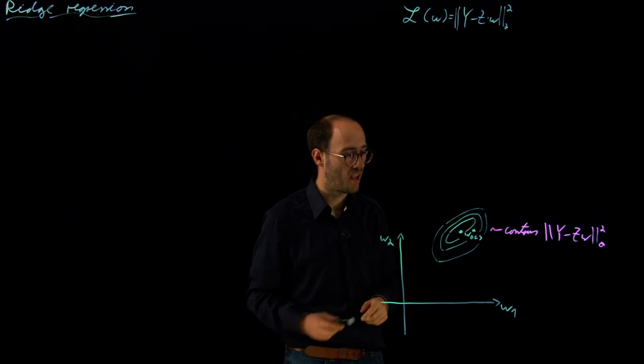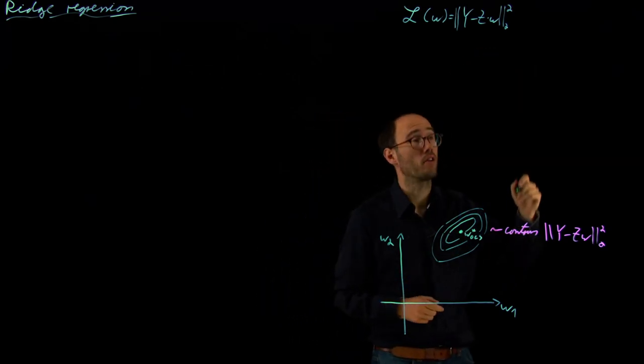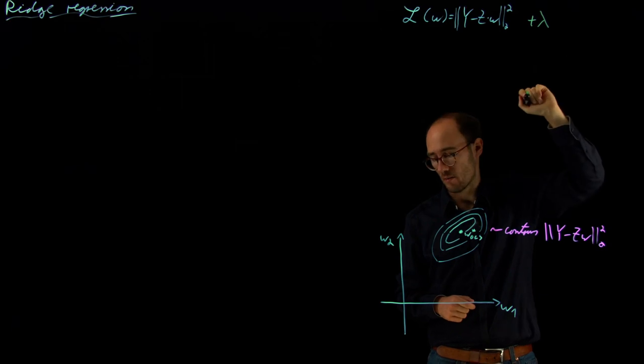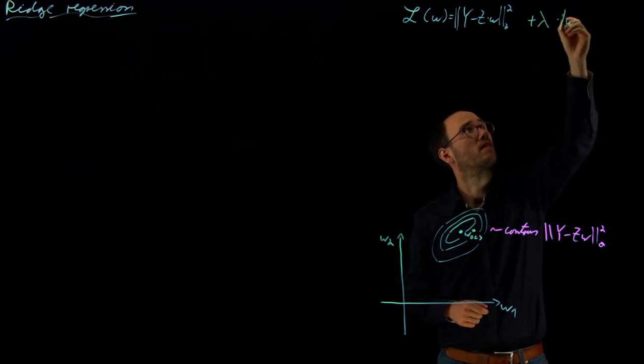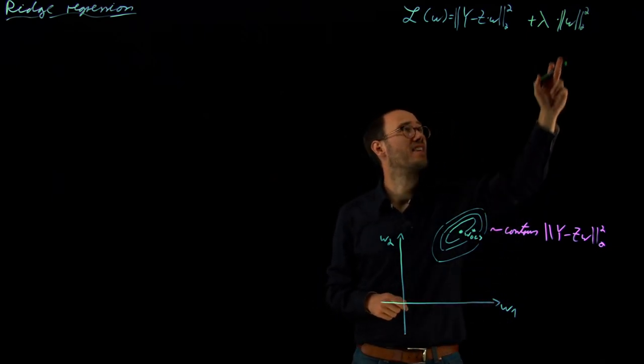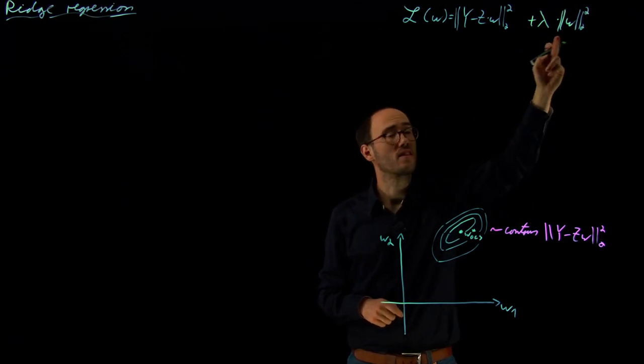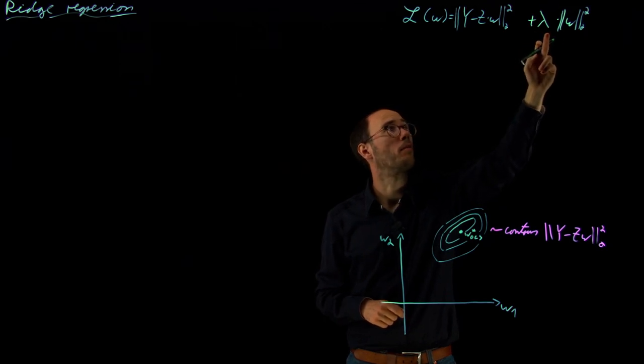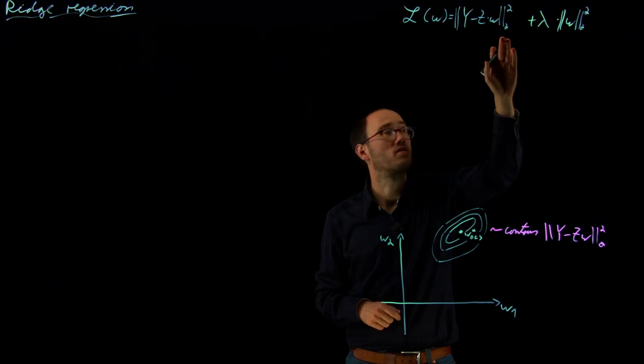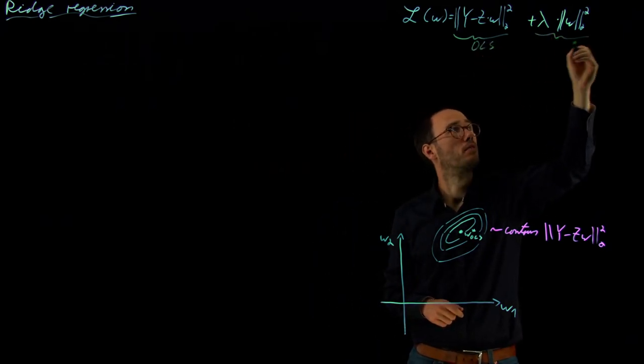The idea of ridge regression is to compensate for this issue by adding a penalty term to our loss function. This penalty term is some weighting factor lambda, a scalar, times the squared Euclidean norm of w. So we will sum up all the squares of the parameters, multiply them with lambda, and have a trade-off between a squared penalty loss on the parameters and the ordinary least squares solution.